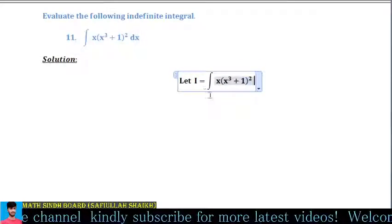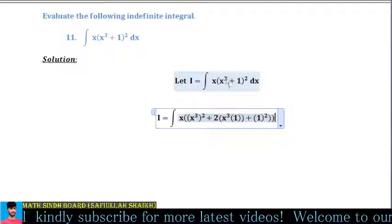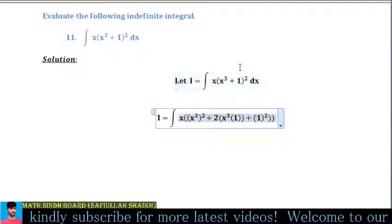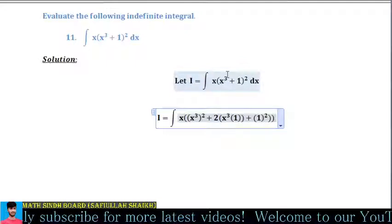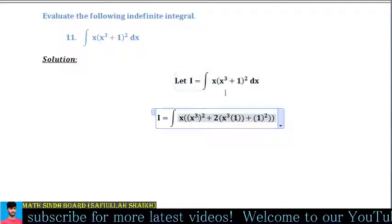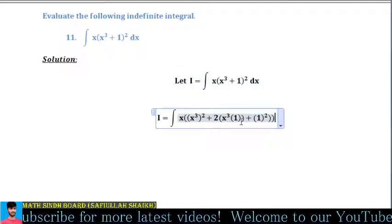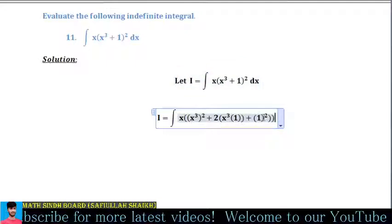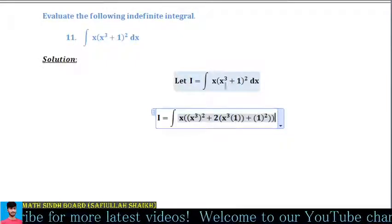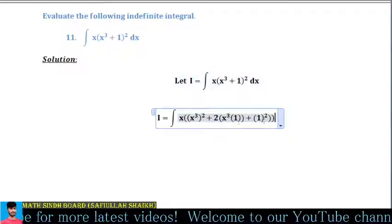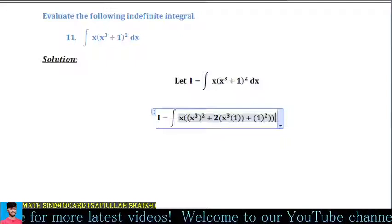We know very well that (a + b)² = a² + 2ab + b². Similarly, we apply this to x³ and 1. So (x³ + 1)² = (x³)² + 2·x³·1 + 1². You can use this formula here to simplify.